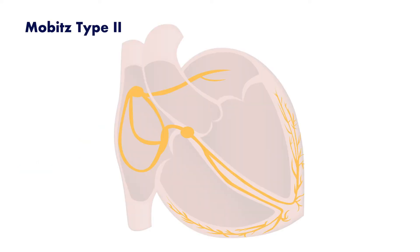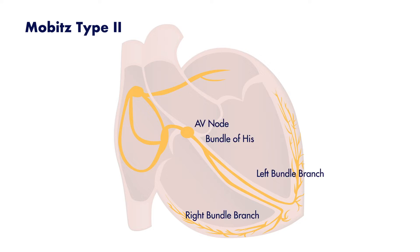In Mobitz type 2 second degree AV block, the underlying disease is located within the His-Purkinje system. This block can occur below the AV node, within the bundle of His, or within the bundle branches. This is characterized by unpredictable failure of the His-Purkinje pathway to conduct the impulse from the atria to the ventricles.